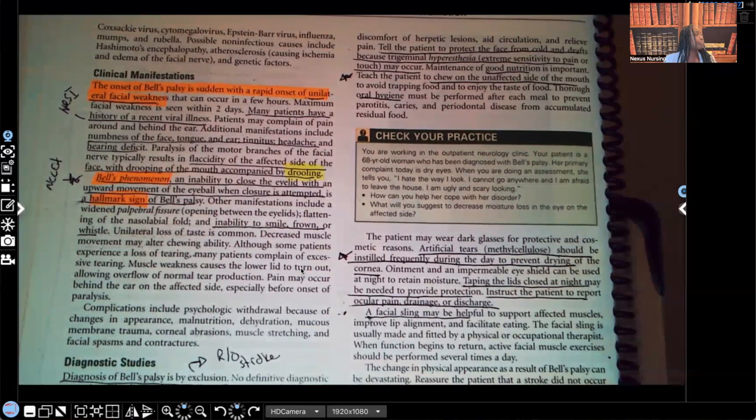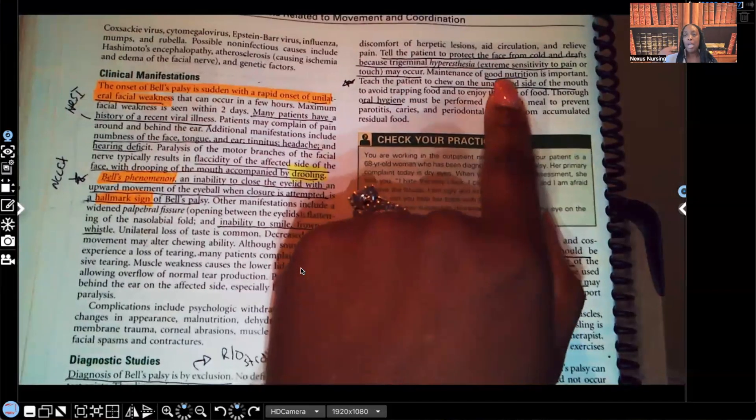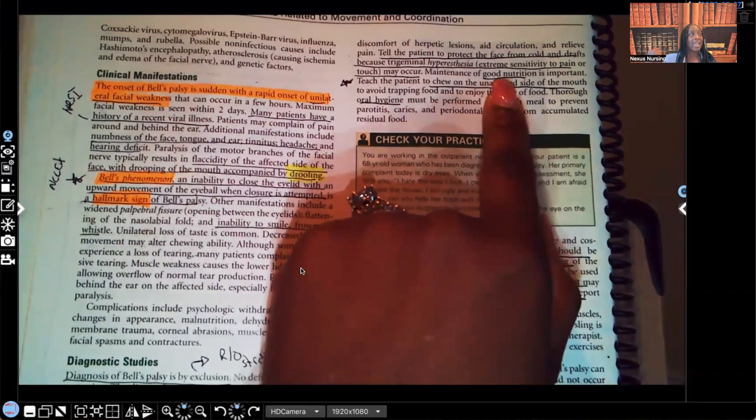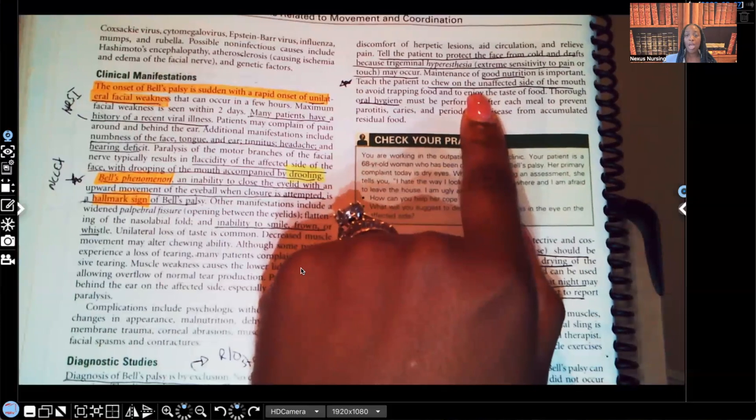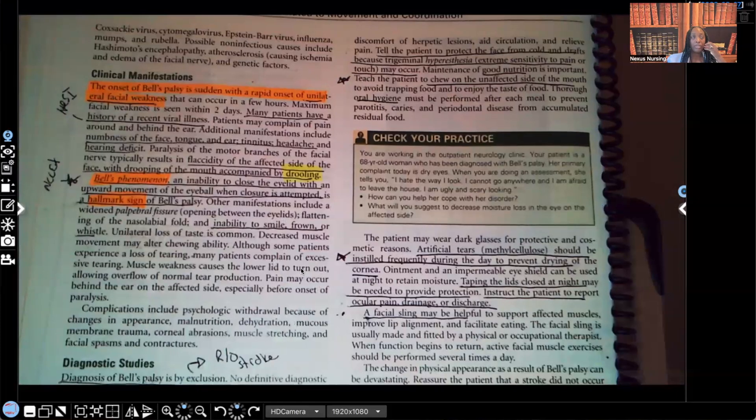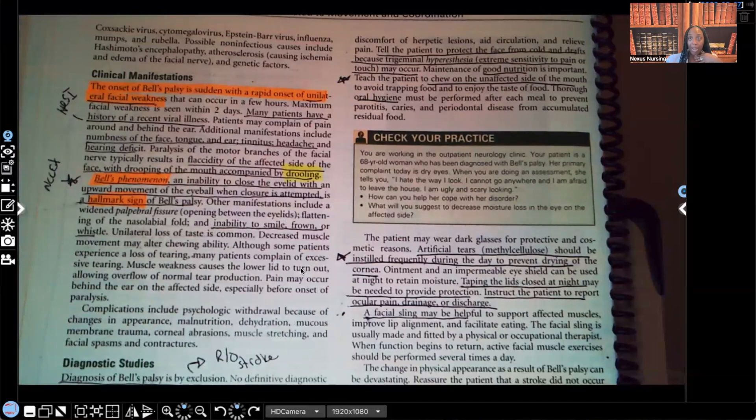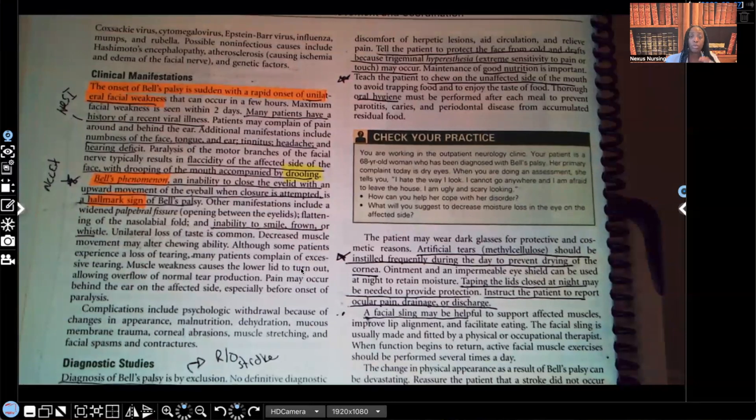We're going to teach them about good nutrition. We're going to teach them to eat foods high in protein, high in vitamin C, drink lots of fluids. We're going to teach them to chew on the unaffected side. Why? Because we don't want them to have food pockets. We don't want them to aspirate, right? We want them to be able to swallow fully. We want them to be able to chew fully. We're going to teach them about the importance of oral hygiene.